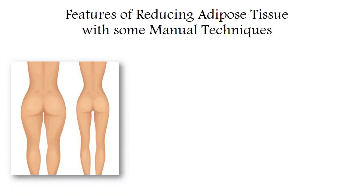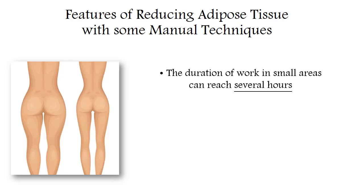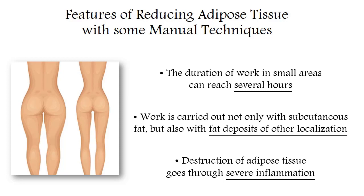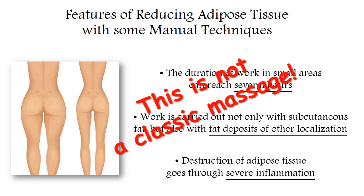Some massage therapists and their clients may not agree with this opinion. As an example, they sometimes cite manual techniques in which fat stores and tissues can still decrease. But if we carefully study these techniques we will see that in order to achieve this effect a special dosage is necessary — sometimes estimated at several hours of work in a small area of the body. Also the impact with such techniques falls not only on subcutaneous fat but also on more deeply located tissues. The result achieved with such a massage goes through very strong inflammation of the tissue, which can carry certain risks and is not welcomed by the authors of traditional massage techniques. And finally, the authors of such methods themselves do not call it a massage, despite the fact that it is made by hand. In other words, a classic massage does not have a significant fat-burning effect.